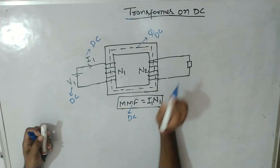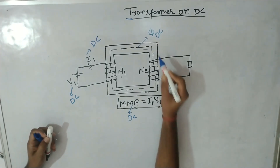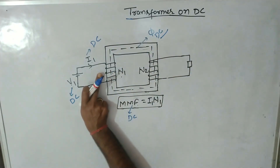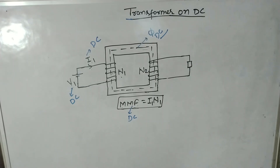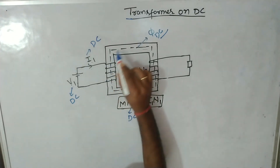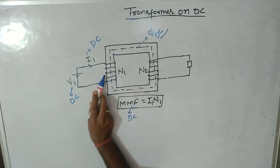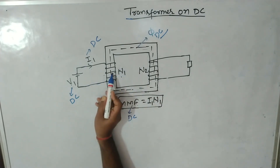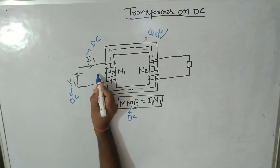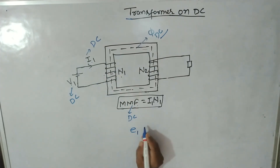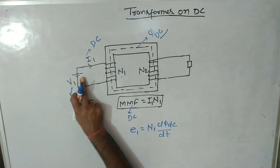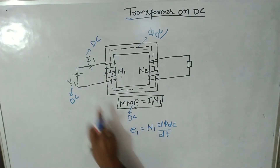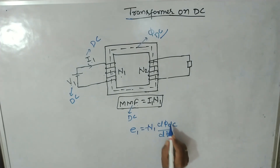This DC flux will also pass through and link with the secondary winding of the transformer. Therefore, the same flux φ_DC is getting linked with both the coils having number of turns N1 and N2. As soon as flux is developed in the magnetic path, there will be an induced EMF in the primary winding. The induced EMF is E1 equal to N1 · dφ_DC/dt.